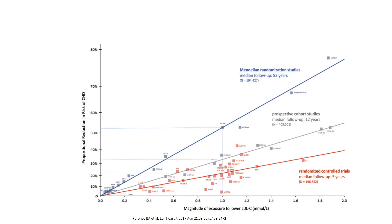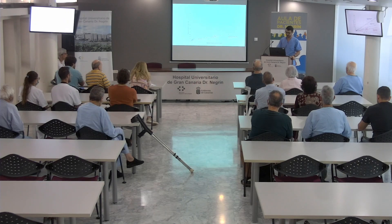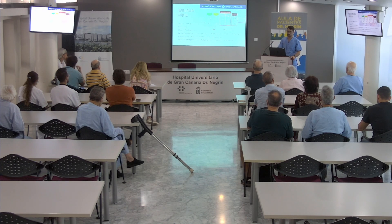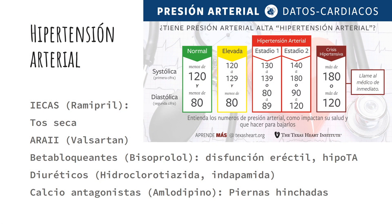¿Y la hipertensión arterial es otro invento de la farmacia? Yo creo que no. Hay un estudio gigante que lleva 70 años haciéndose en una ciudad de Massachusetts llamado el estudio de Framingham. Esta gente empezó en los años 50 y hasta ese momento no se sabía ni que el tabaquismo mataba, ni que la obesidad acortaba la vida, ni que el colesterol era malo. La tensión se pensaba que era 120 más la edad de la persona, o sea que si tenías 80 años, tu tensión normal era 200.